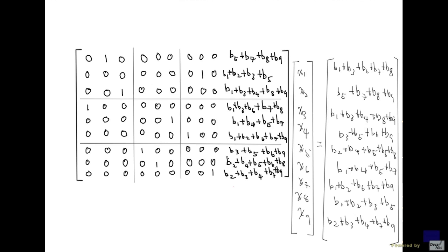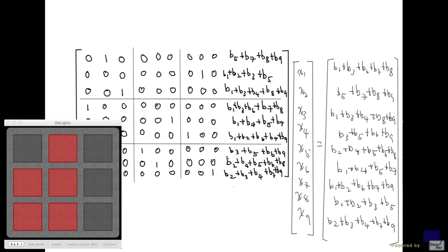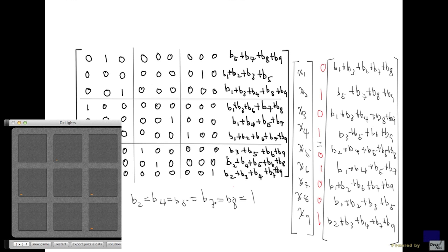That's the solution in terms of the b-values. Bringing back the configuration of lights: b2 = b4 = b5 = b7 = b8 = 1 and the rest are 0. Plugging in, the solution tells us we need to press squares 2, 4, 6, and 9 — and as you can see, that solves the puzzle.